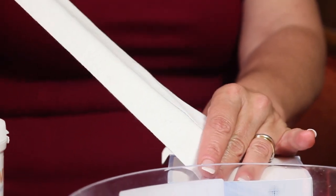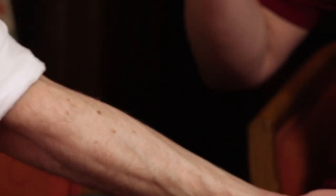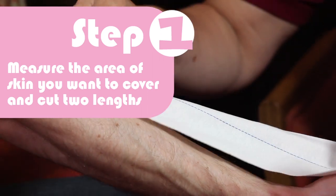So in order to do a wet wrap, what we do is first of all we need to measure the area. And this is a method called patch wrapping.